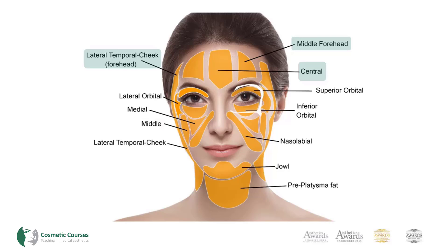Moving down towards the eyes, we see three separate compartments: the lateral orbital, the inferior orbital, and the superior orbital compartments. The superior and inferior orbital fat compartments lie within the perimeter of the orbicularis retaining ligament.